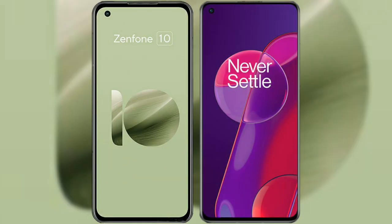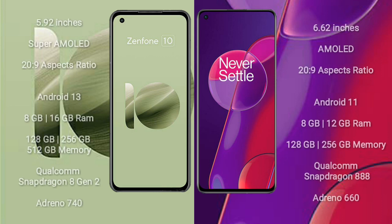I will compare the new Asus Zenfone 10 with the OnePlus 9RT. The Asus Zenfone 10 comes with a 5.92-inch Super AMOLED display, while the OnePlus 9RT comes with a 6.62-inch AMOLED display.